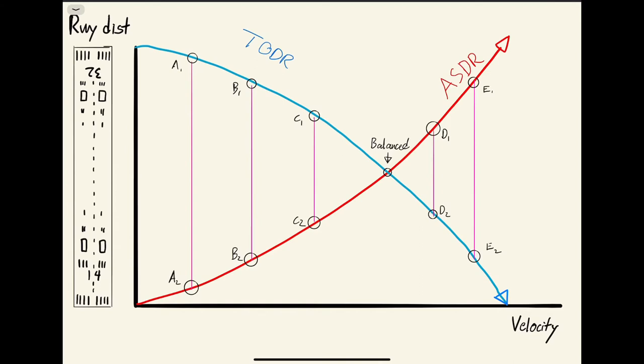You can see the letters that I've drawn in the red line, A2, B2, C2, D1, and E1. Notice as the aircraft velocity increases, the distance required to get it to a complete stop keeps increasing.